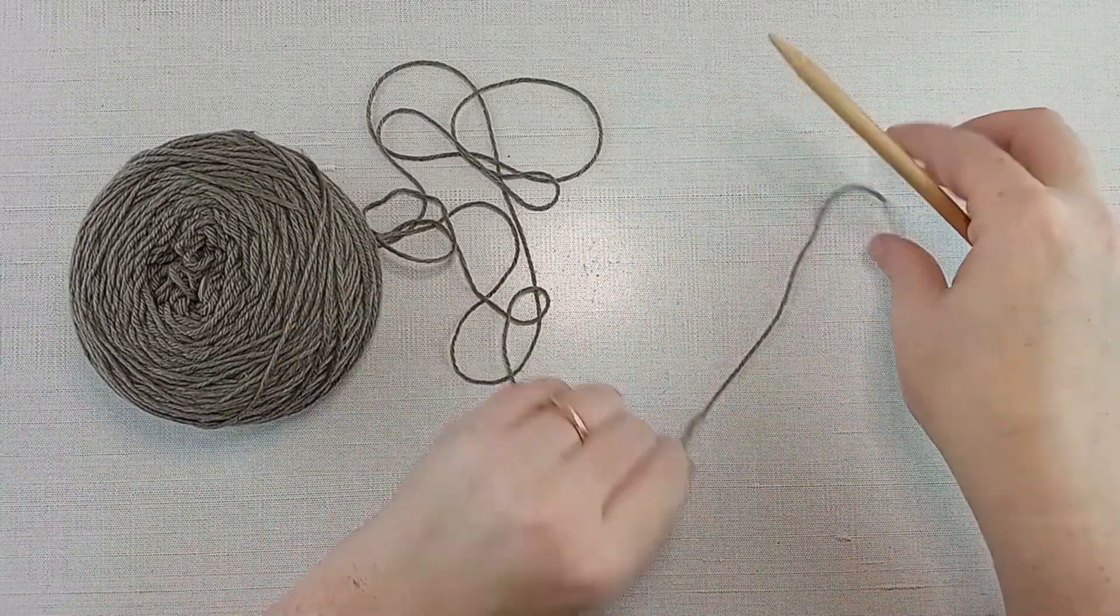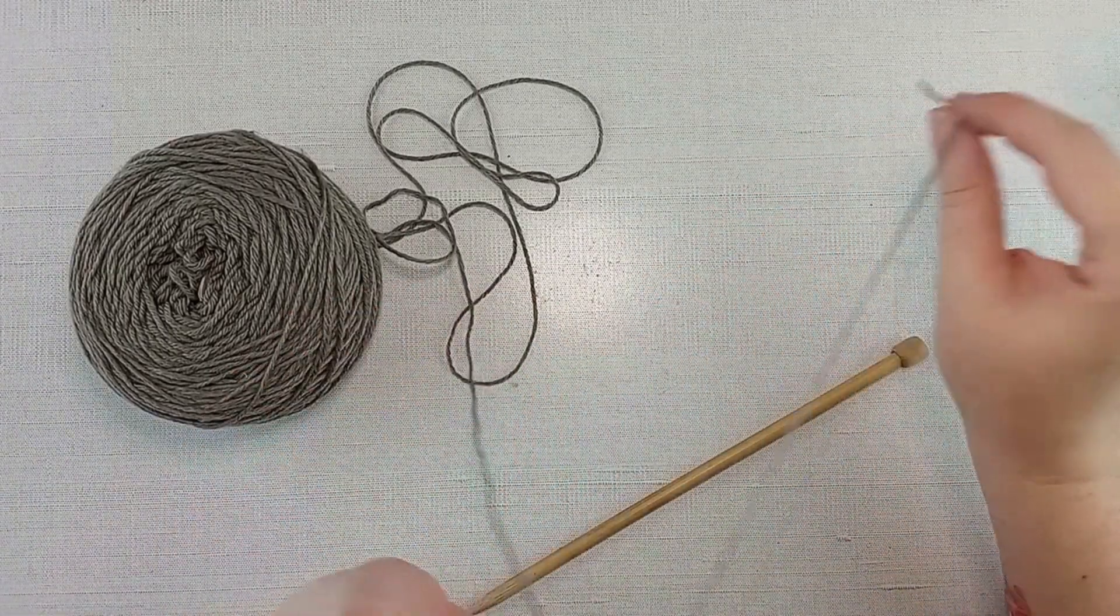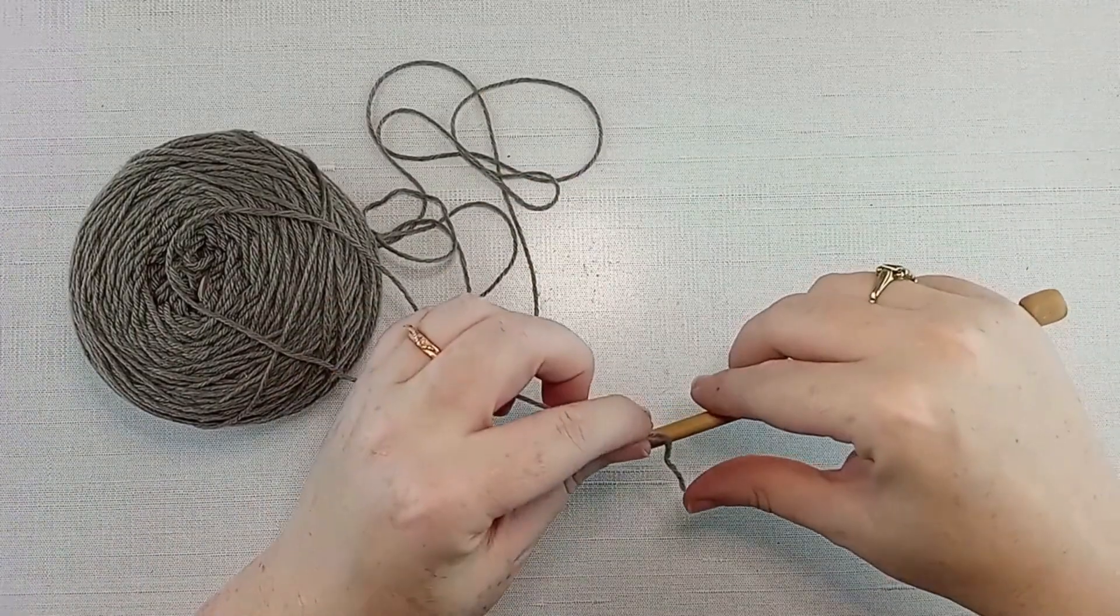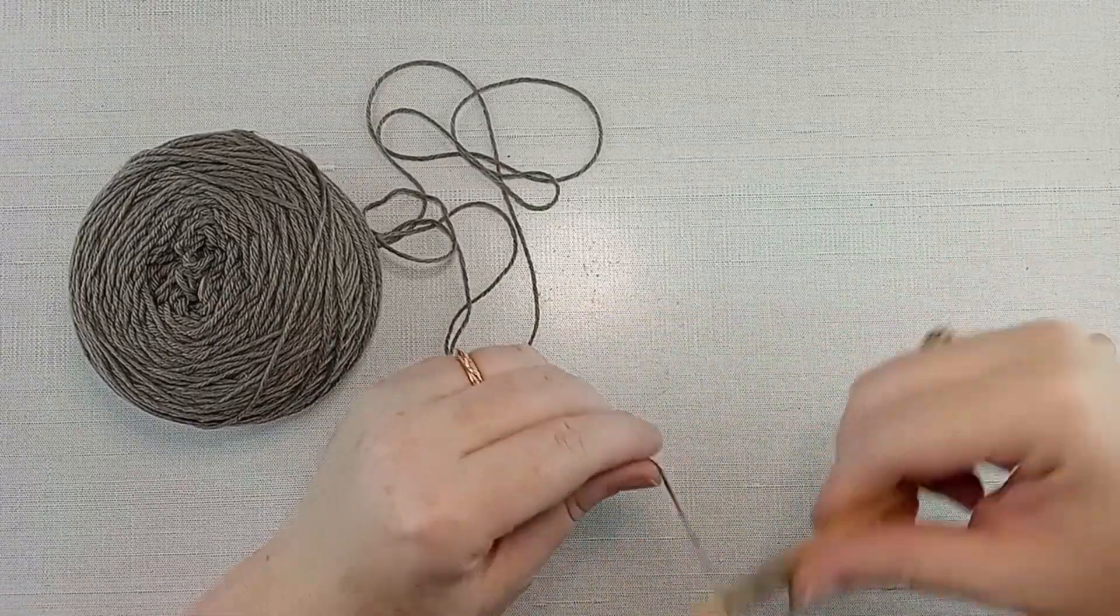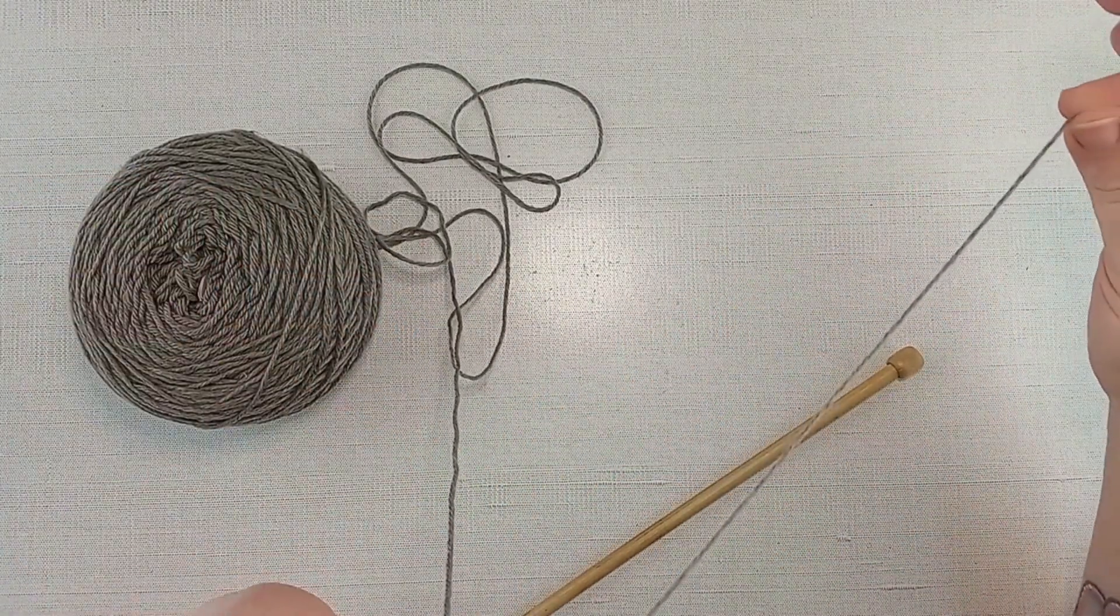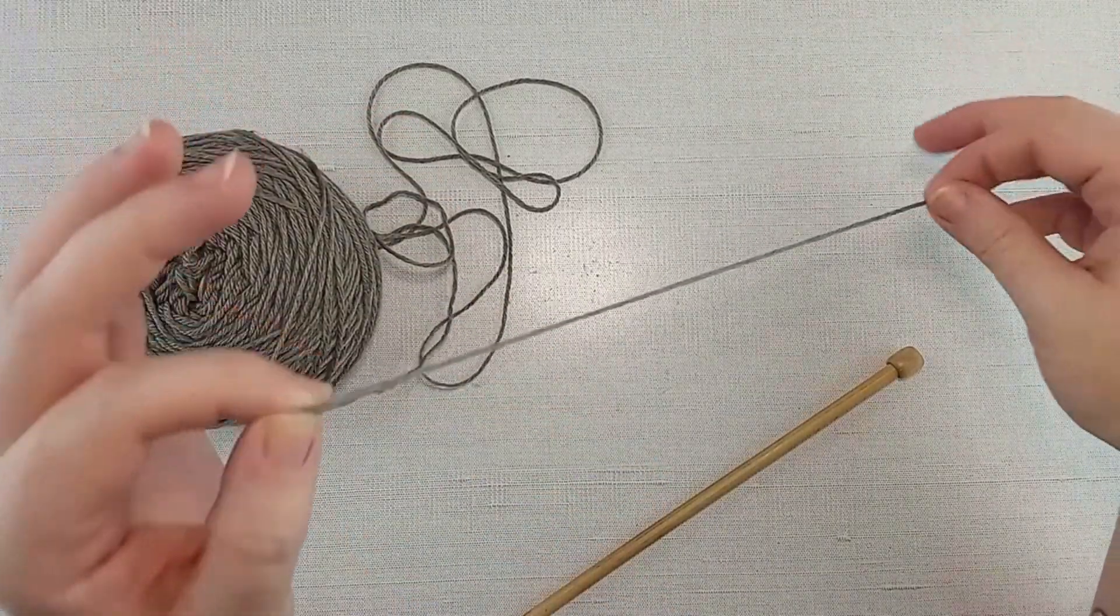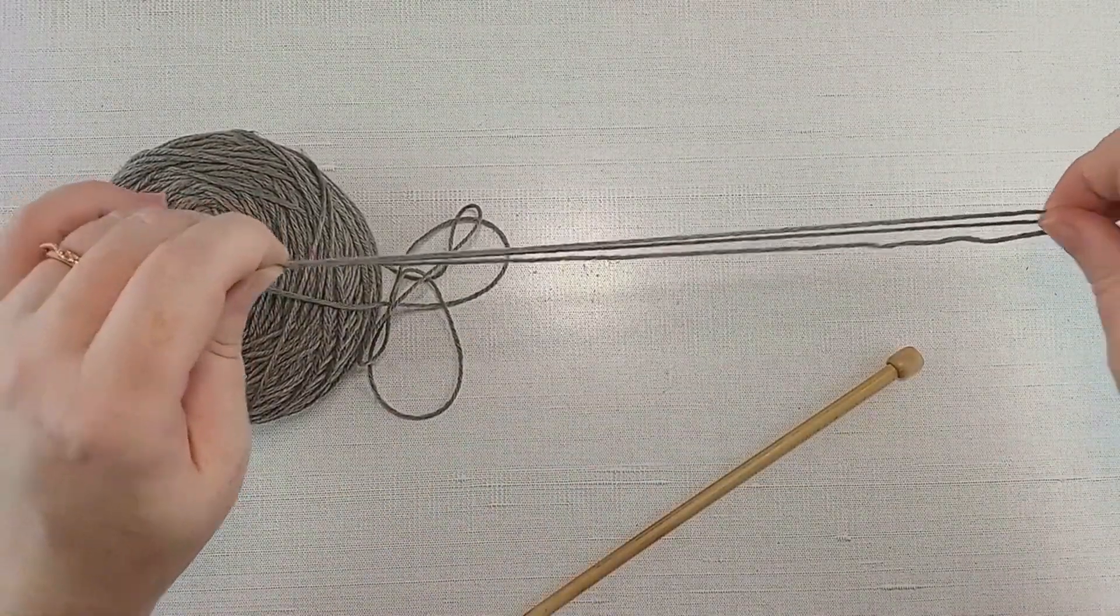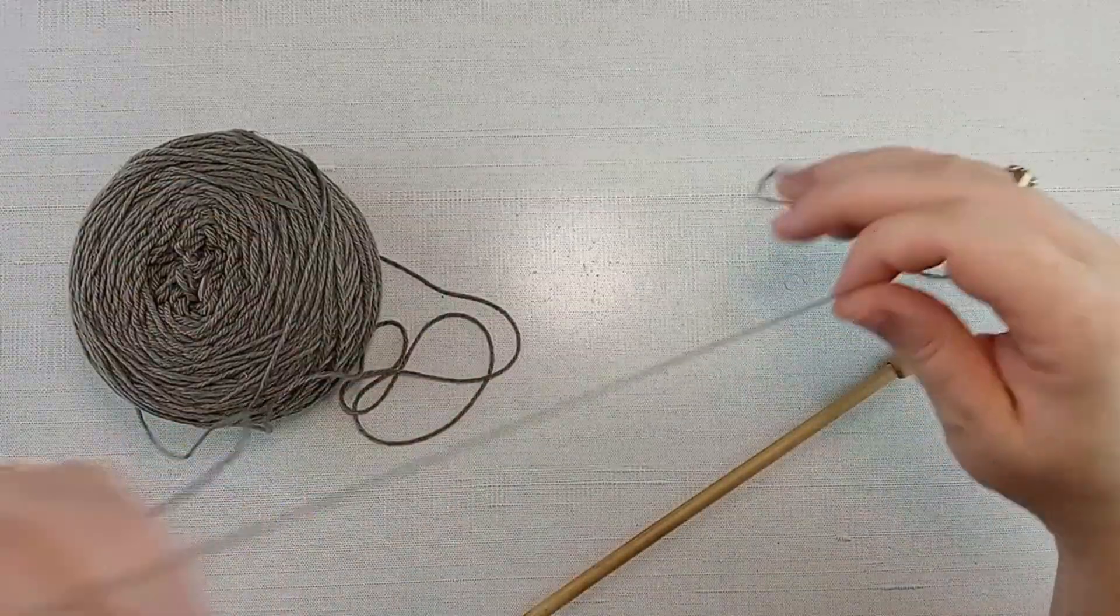For the long tail cast on, we need to estimate about how much yarn we'll need for our long tail. To do this, I like to use my working yarn and wrap it around my needle 10 times. That is about the length that we would need for 10 stitches. So if our pattern says cast on 90 stitches, we can measure this nine times to get our 90 stitches. We are not going to cast on 90 stitches today, so let's just start with a little tail.